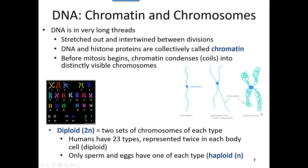In our bodies, we have two sets of chromosomes for each type. Humans have 23 types of chromosomes and two of each — two of chromosome number one, two of chromosome two, all the way to chromosome 22, and then the sex chromosomes, which are either two X's or an XY depending on sex. Having two sets of each chromosome is known as the diploid number — our 2N. Since we have 23 types and two of each, we have a total of 46 chromosomes in each and every one of our cells.